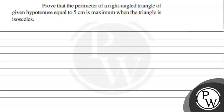Hello students, let's read the question. The question says: prove that the perimeter of a right angle triangle of given hypotenuse equal to 5 is maximum when the triangle is isosceles. First, we see the key concept.